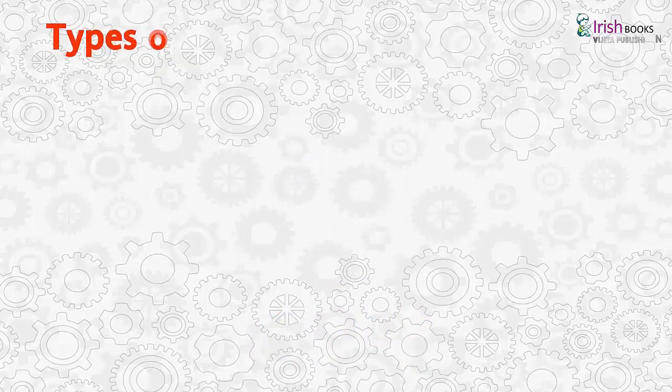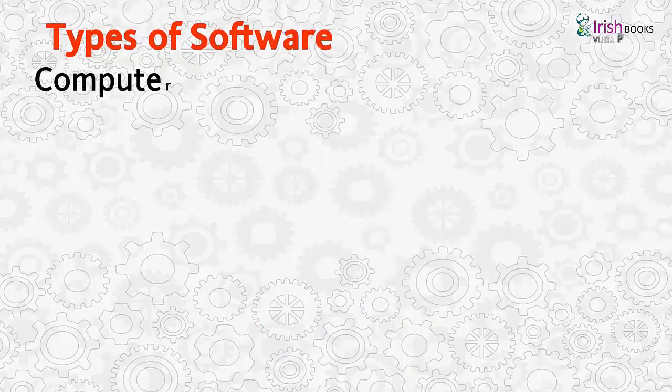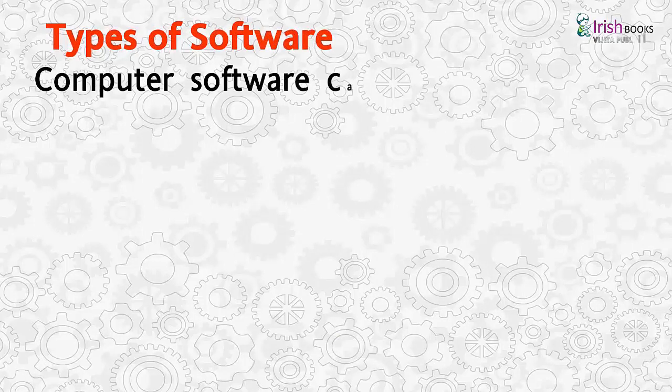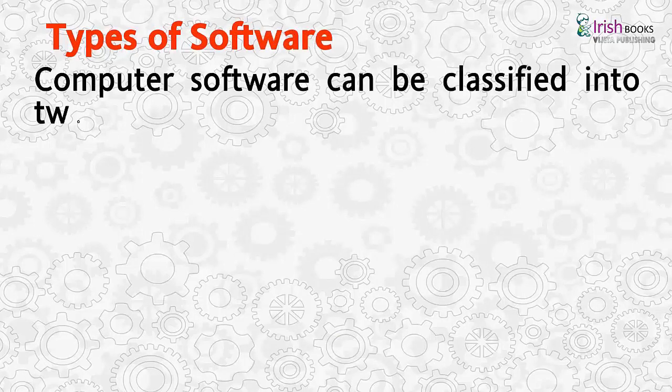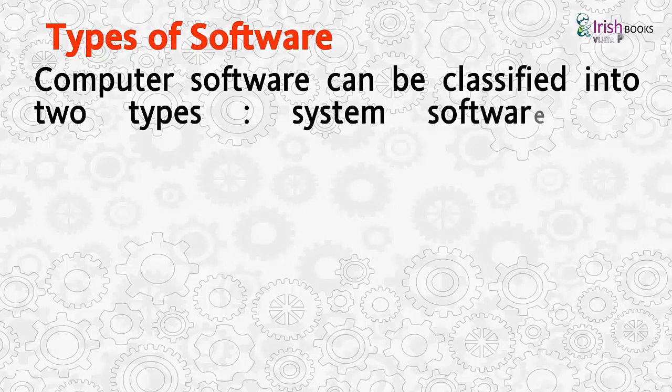Types of software. Computer software can be classified into two types: system software and application software.